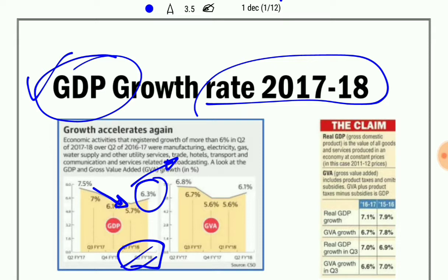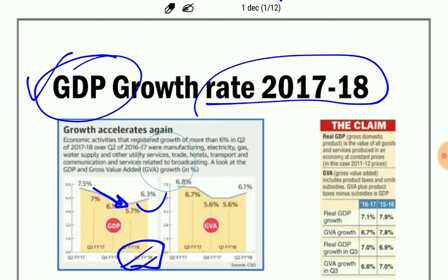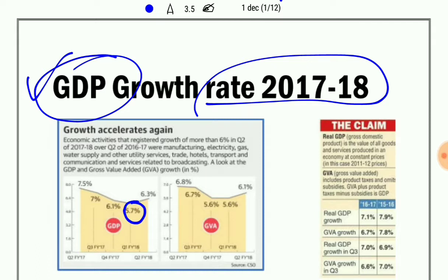The second significant thing is that in the first quarter after demonetization and GST, it showed a negative declining trend. Many experts were saying that the declining trend was because of demonetization and GST. Now it can be concluded that the effect of GST and demonetization has gone off.